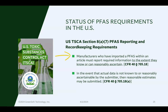Manufacturers who have imported a PFAS within an article must report the required information to the extent they know or can reasonably ascertain — that's worded right into the regulation. EPA is aware that going back to 2011, we may not be able to figure out every single PFAS chemical in every article imported, but to the extent we're able to figure that out, we're supposed to try and provide that information.